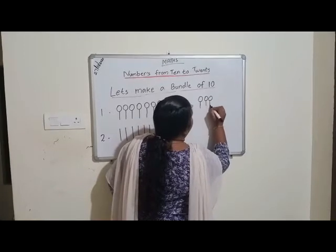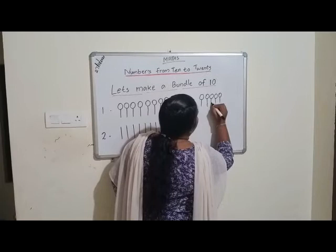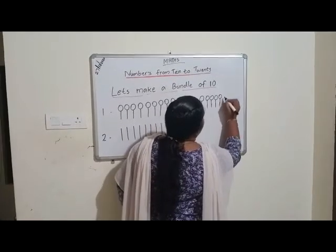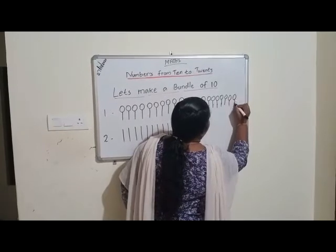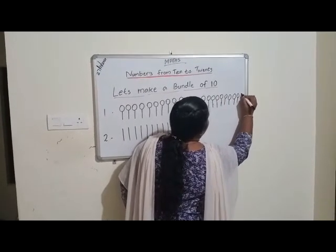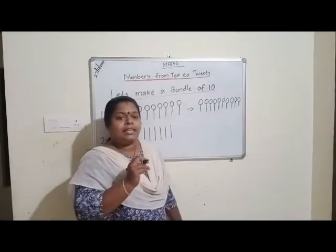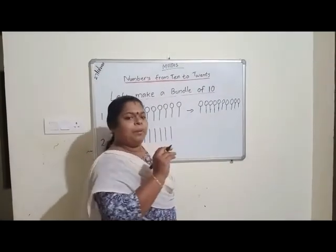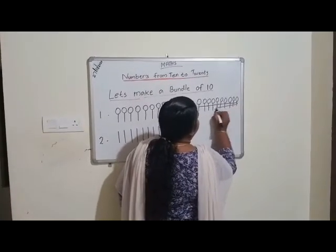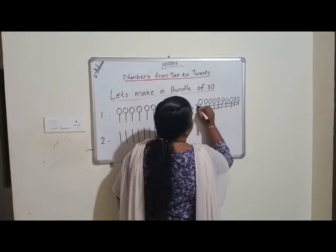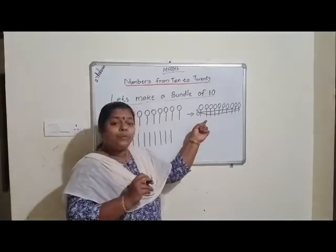3, 4, 5, 6, 7, 8, 9, 10. I have tied the 10 lollipops together. This is a bundle of 10.